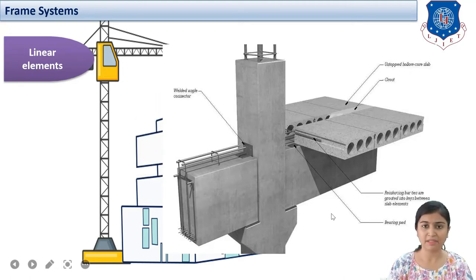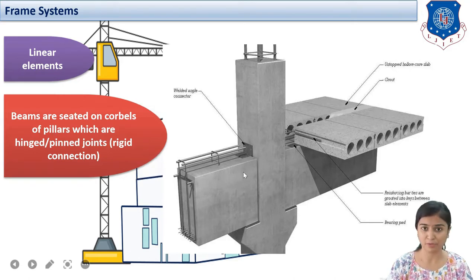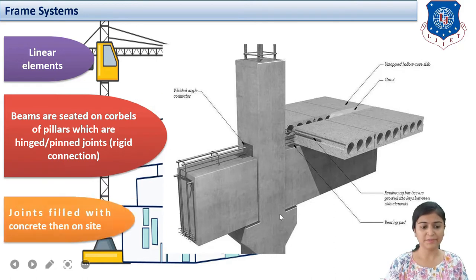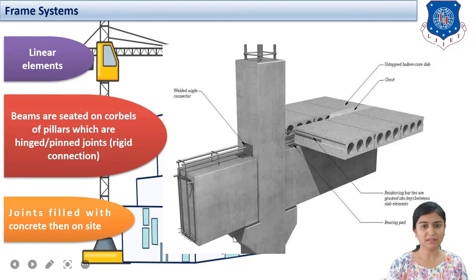This is our standard typical conventional frame system. The elements will be called the linear elements. The beams are seated on corbels of pillars which are hinged or pin joints. Corbel means a supporting beam — you can see the extended portion. The corbel is also provided in case of windows at the sill of windows. It will be connected with the help of pinned or hitched joints. The joints will be filled with concrete; they will not be left open. It will be filled up with cast and set concrete. These are my supporting elements and this is my corbel.